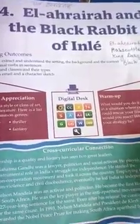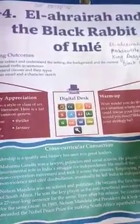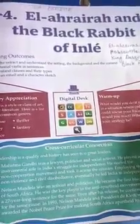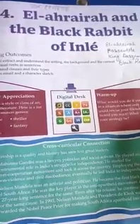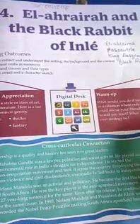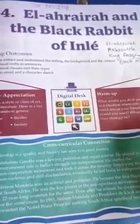Hello students, so today I am going to explain you the 4th chapter of your new Aster book. The chapter name is El Arayra and the Black Rabbit of Inle.